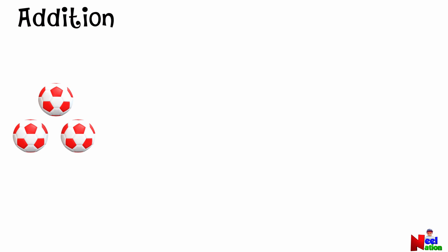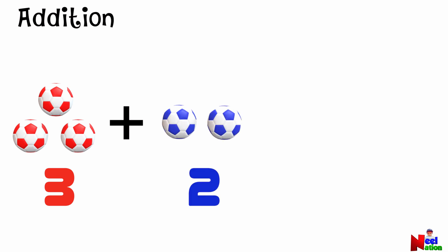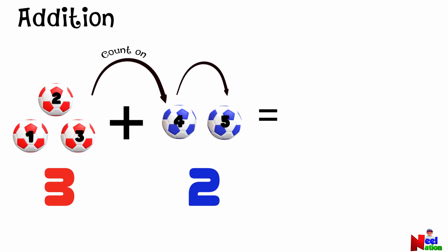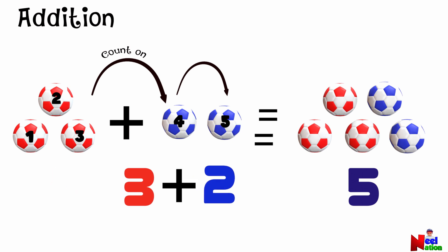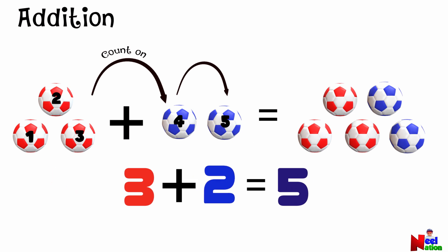Look, we have three soccer balls right here. Now watch carefully as two more soccer balls roll in and join the group. Let's count them together. We started with three soccer balls, and kept counting on starting after three — that is four and five. So three plus two equals five. That is called the counting on method.